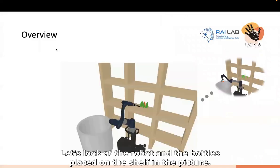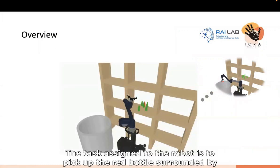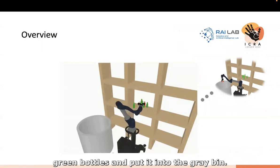Let's look at the robot and the bottles placed on the shelf in the picture. The task assigned to the robot is to pick up the red bottles surrounded by green bottles and put it into the grey bin.